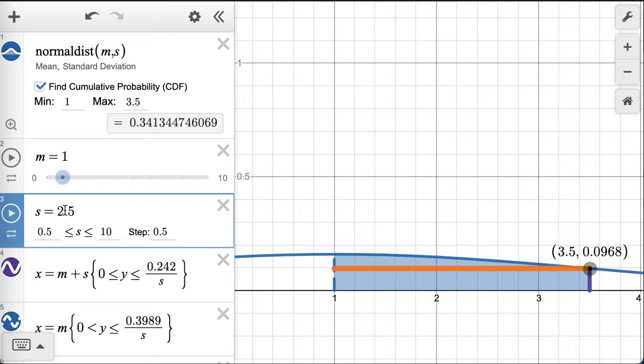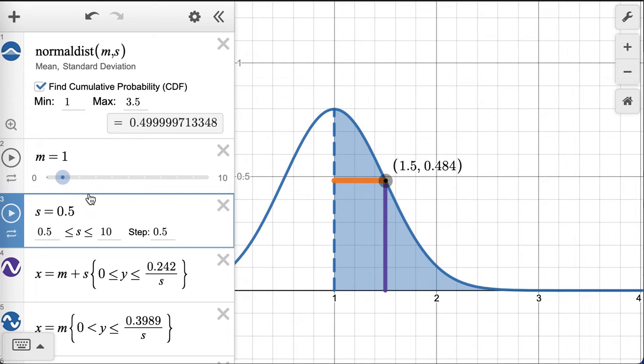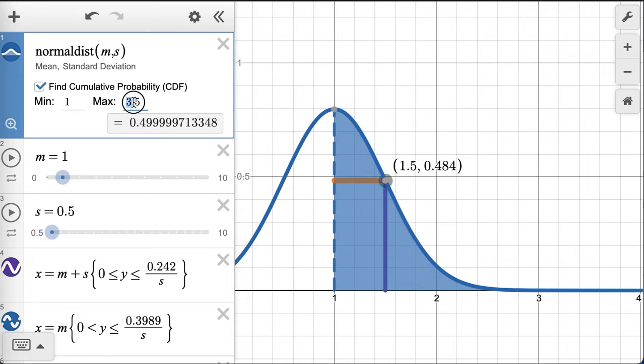So if I drop this back down to 0, the area, now I have to adjust it, this one here, it's only going out to about 1.5. That's still 34% of the area. And this is the inflection point. So here the standard deviation is 0.5, the mean is 1.